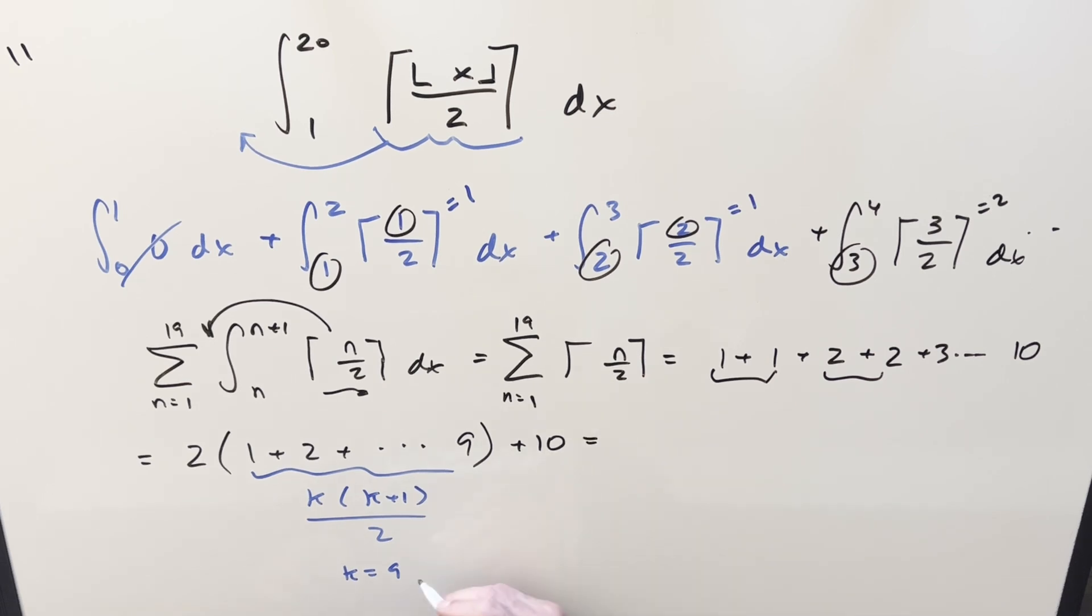So putting this together, we'll plug this back in here. So we're going to have 2 times k, which is 9, times 9 plus k plus 1, which is 10 over 2 plus 10. Cancel the 2s. 9 times 10 is 90 plus 10. And so for my final solution to this, we get 100.